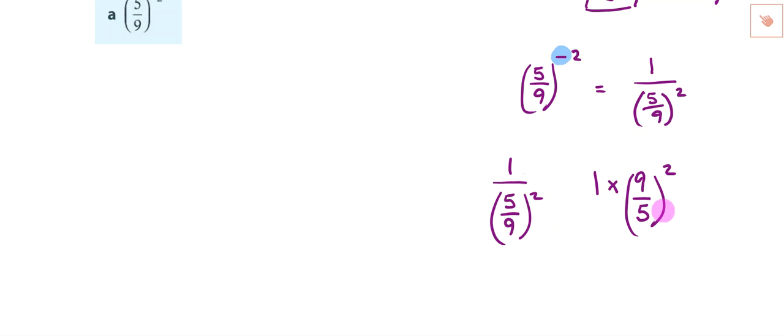And then 1 times that is just that. So what we end up with is up here, I can just write 9 over 5 squared. So what now that looks like is that the negative is not just 1 over, but it looks like we've flipped this fraction upside down. So look at 5 ninths, it's now 9 fifths. The negative is replaced by the reciprocal.